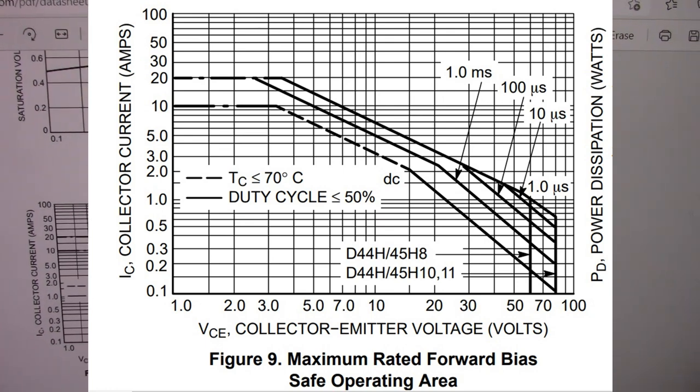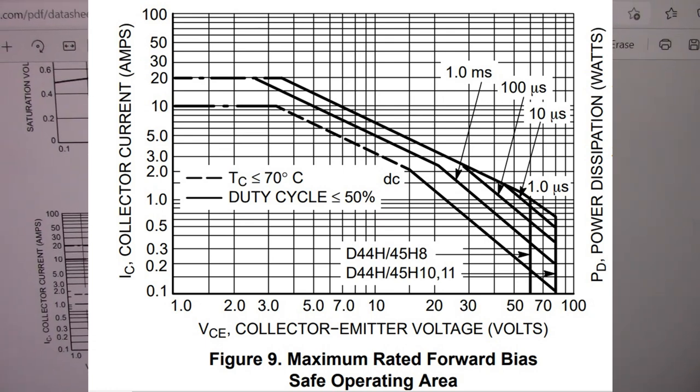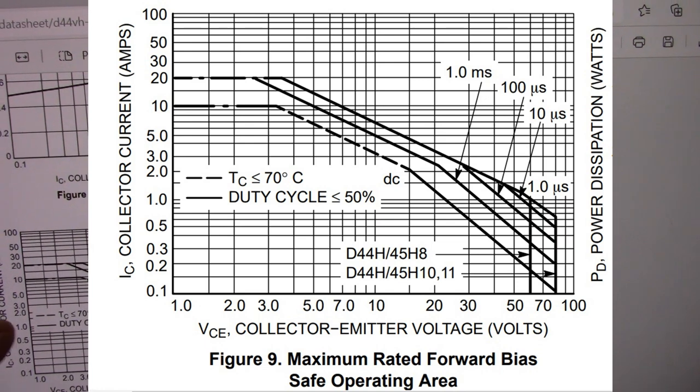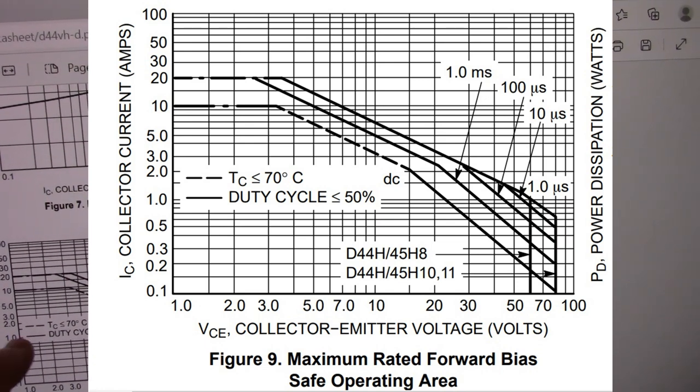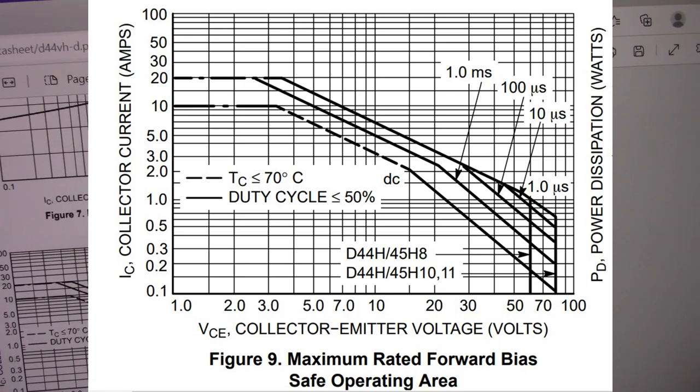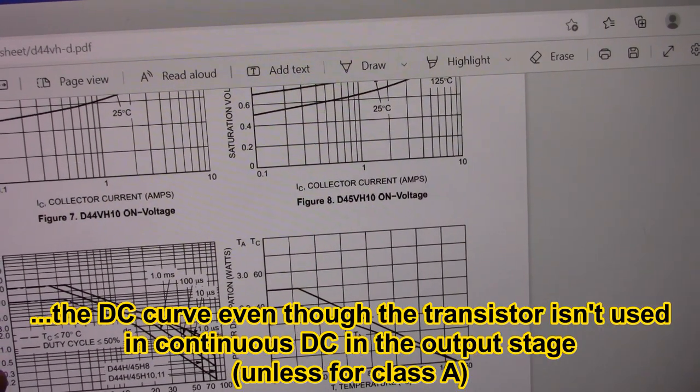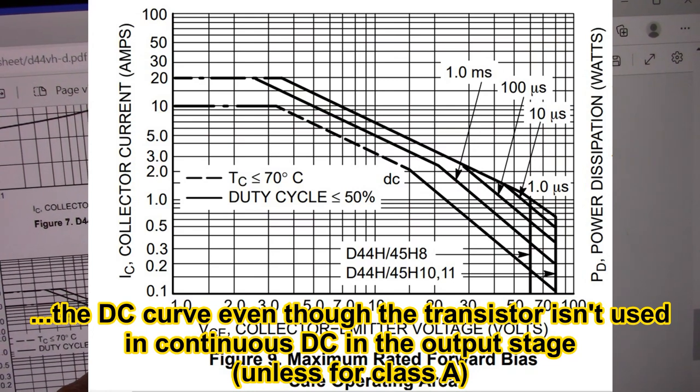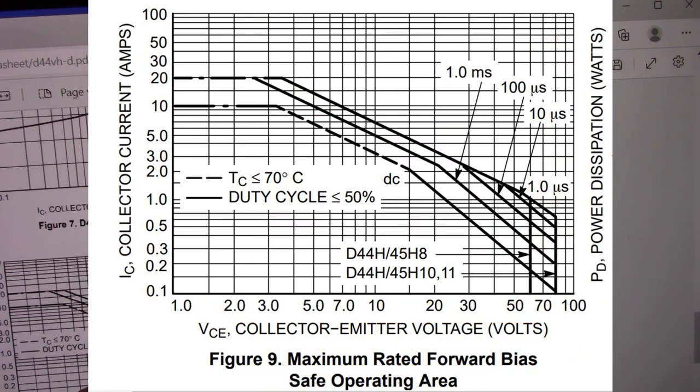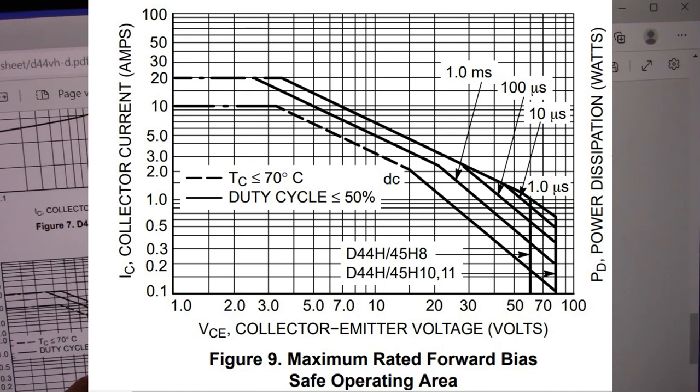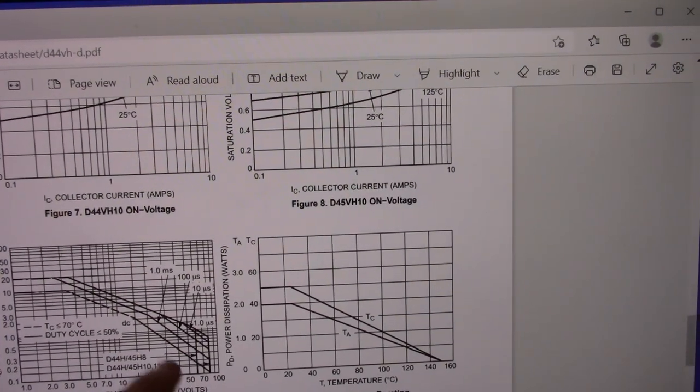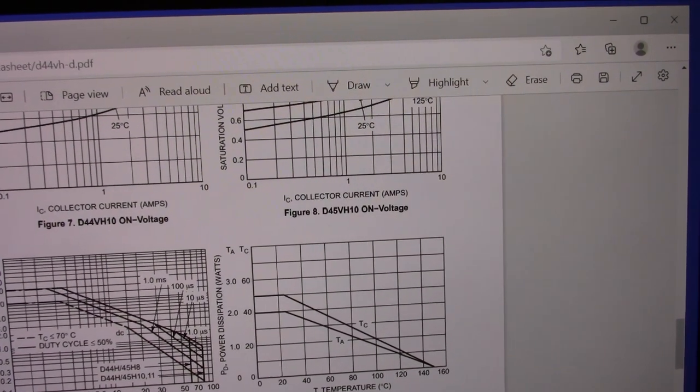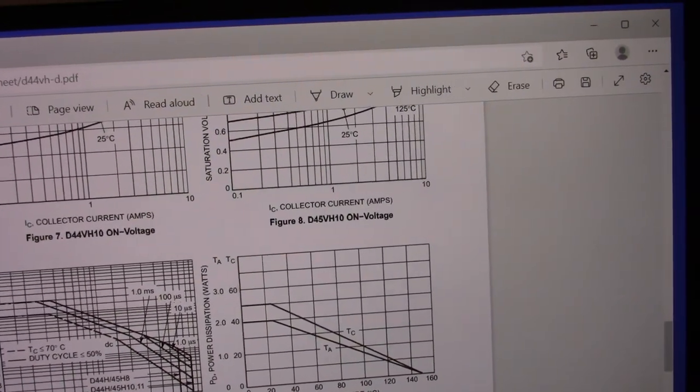Now looking at the safe operating area is where the transistors are not really meant for high power use. So I like to follow the one amp line here out. See where it intersects the safe operating area curve. The one amp line is around 20, probably around 21, 22 volts. That's the DC line. So they're not going to be like the 2SC5200. Those are 250 volt transistors. Much better safe operating area.